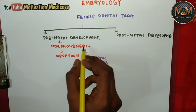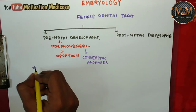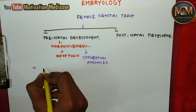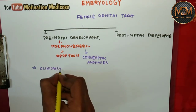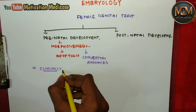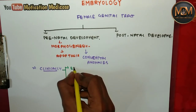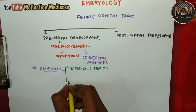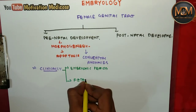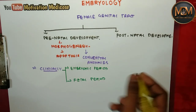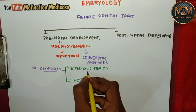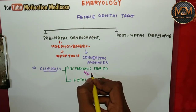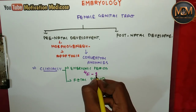That's why prenatal development is very important. Now, talking about the division of prenatal development clinically — we have divided it into two parts. Clinically, we have the embryonic period and the fetal period. The embryonic period extends from fertilization to the end of the eighth week.